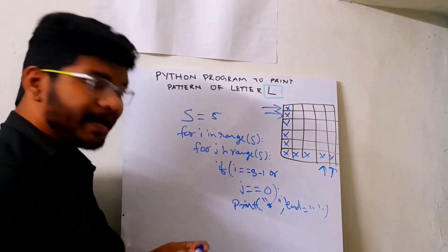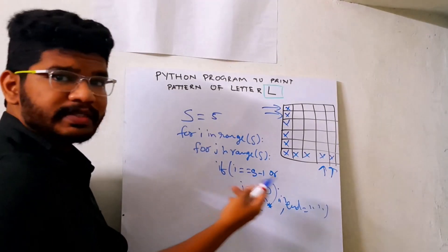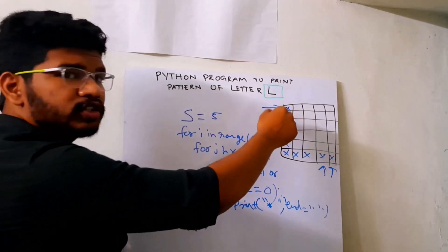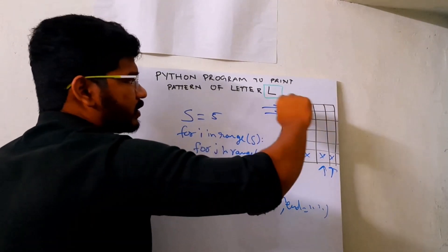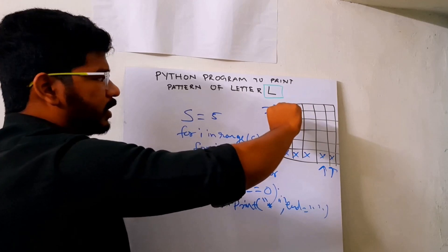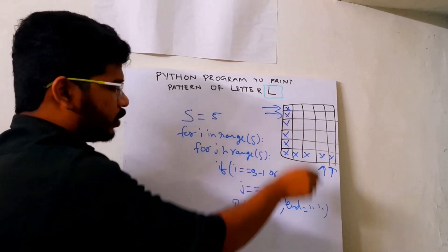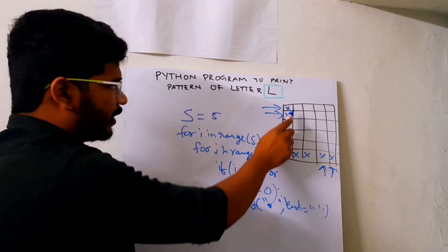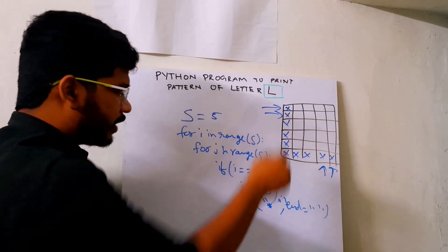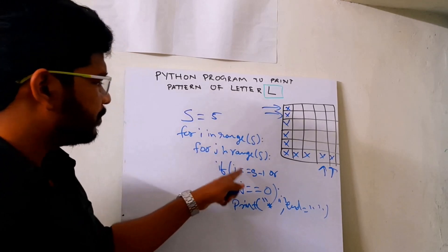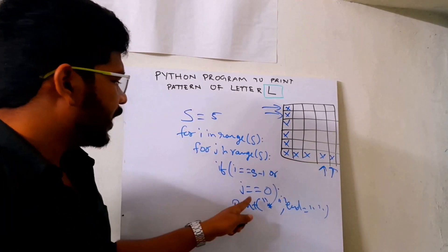I'm also setting end as a space. By default, print takes end as a newline. If I don't set this end parameter, after printing a star it will go to the next line. But I don't want that — I want to print an entire row of stars and spaces first, then go to the next line. So after printing a star I'll give end as empty or space so it stays on the same line.